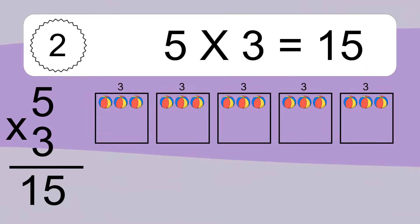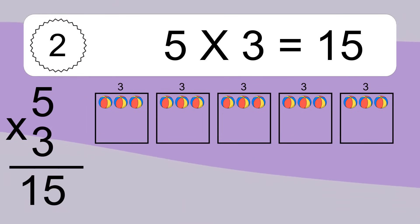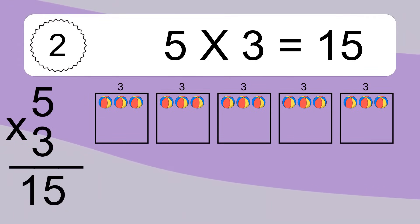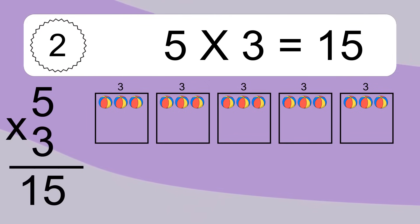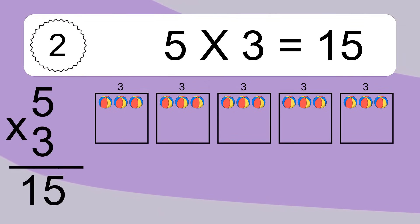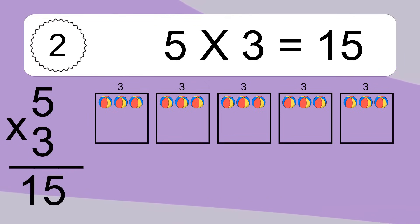We have 5 boxes and each box has 3 colorful balls inside. If you count all the balls in all the boxes together, you will have 5 times 3 balls. This equals 15 balls.